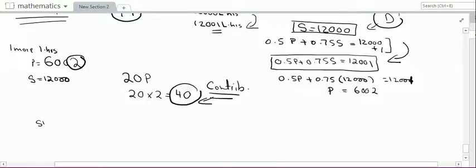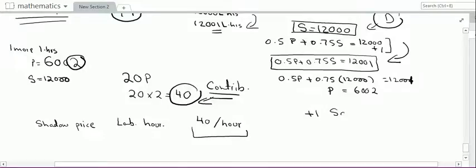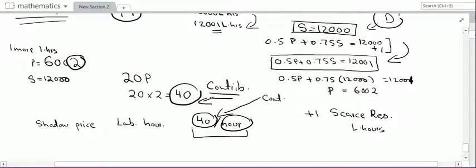Therefore, the shadow price of labour hours is 40 rupees per hour. This means that if I had one more hour of the scarce resource — labour hours — I could have made an additional contribution of 40 rupees for that extra hour.